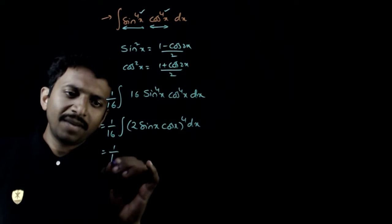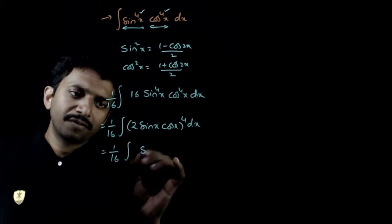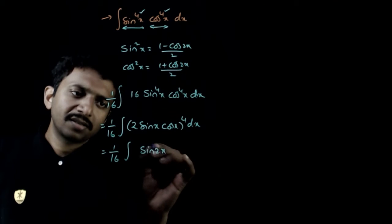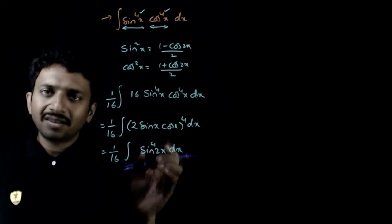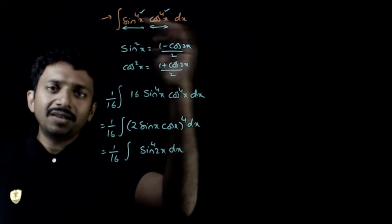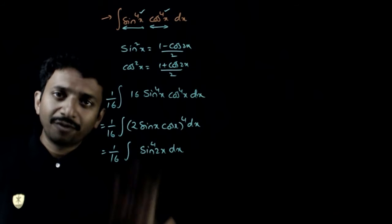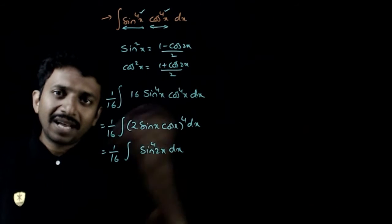That is equal to 1 by 16 times integration of sin 2x power 4 dx. So initially with power 4, the effective power was 8 in the initial integral, now the effective power is 4. So the power has become half.